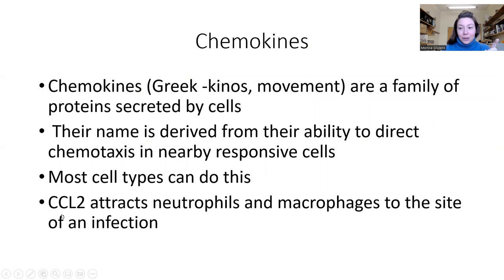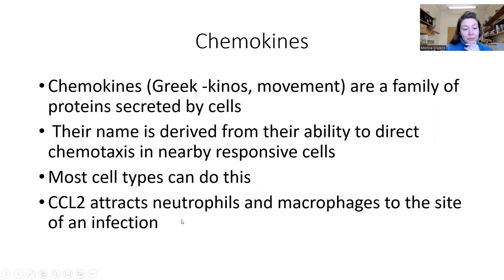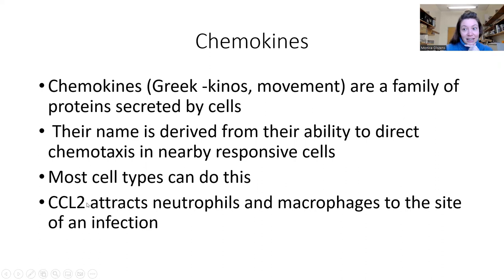CCL2 — which got its current name after I finished my PhD — attracts neutrophils and macrophages to the site of an infection. There are people with deficiencies in CCL2, and there are genetic mouse models where you can remove it. Without it, bacteria get hours or days to make copies of themselves and kill cells. It takes so long for the neutrophils and macrophages to arrive with enough reinforcements to fight. It can be fatal, and every infection becomes a serious infection. So chemokines are really important.